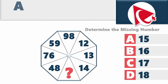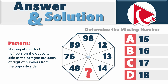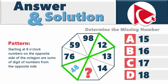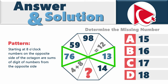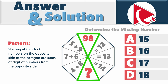To answer this question, you need to look closely to determine the pattern. Starting at 8 o'clock, numbers on opposite sides of the octagon are sums of digits of numbers on the opposite side. For example: 48 → 4+8=12; 76 → 7+6=13; 59 → 5+9=14. The missing number is 9+8=17. The correct answer is Choice C, 17.